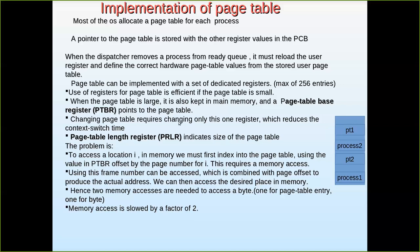Changing the page table requires only changing the page table base register. After one process is completed and the next process is accessed, for example if process one's page table is at 4000 and process two's is at 5000, just changing the page table base register from 4000 to 5000 is enough. Now it points to the new page table, from which the page numbers and their respective frames of the new process will be extracted.